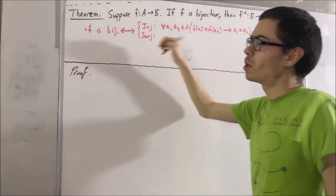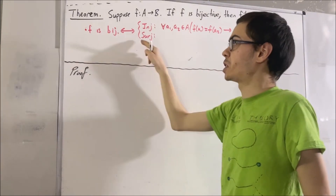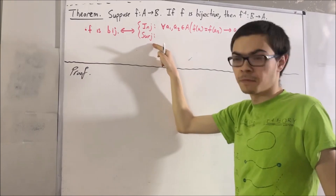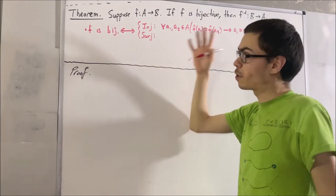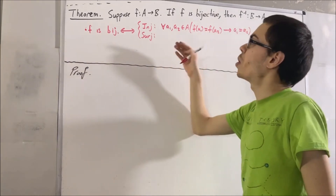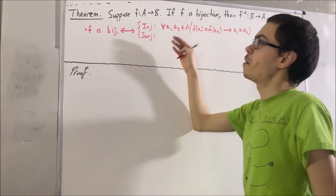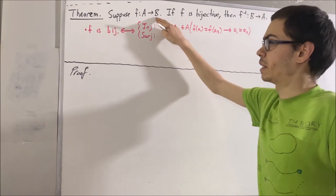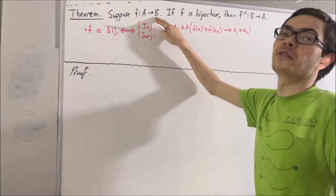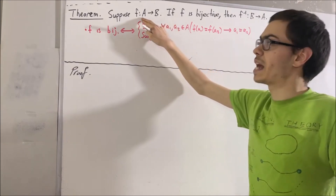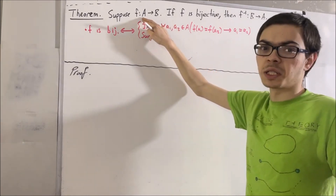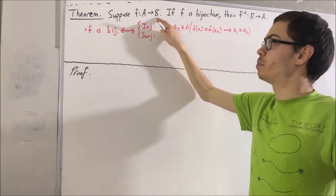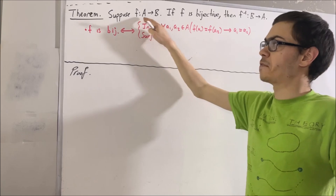And next, what does it mean for f to be surjective? Well, if you recall, all that means is for every element b in B, there is an element a in A such that b equals f(a).